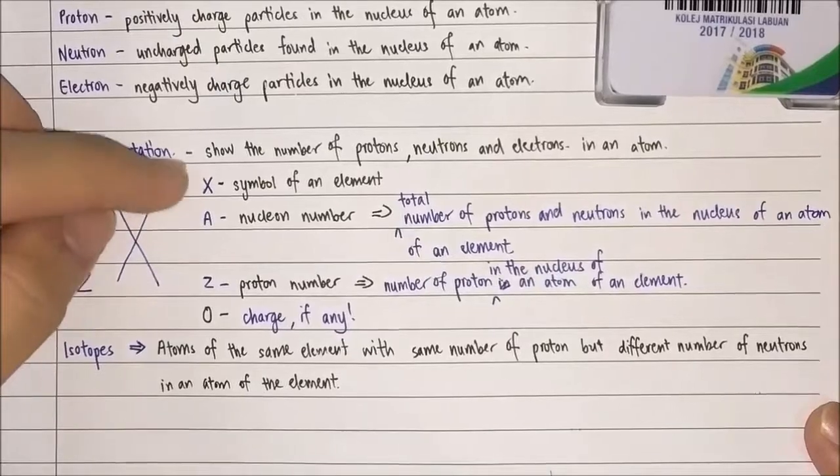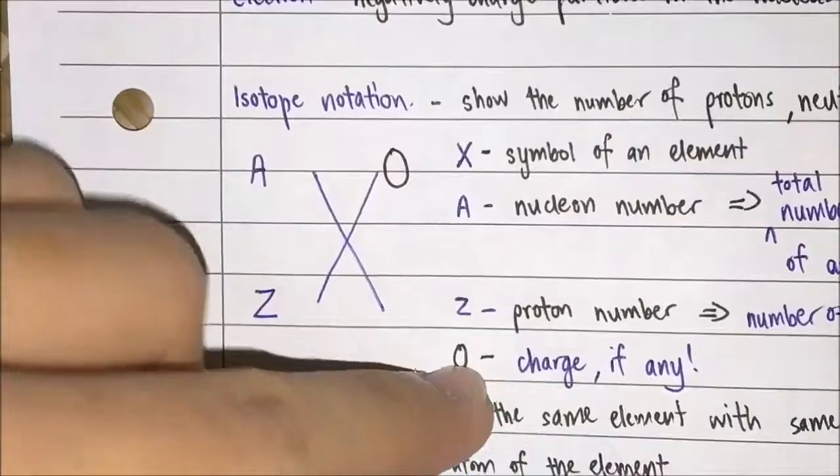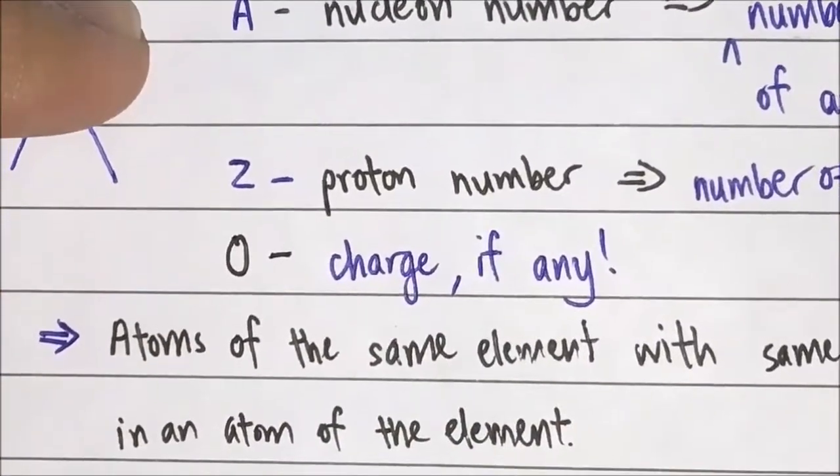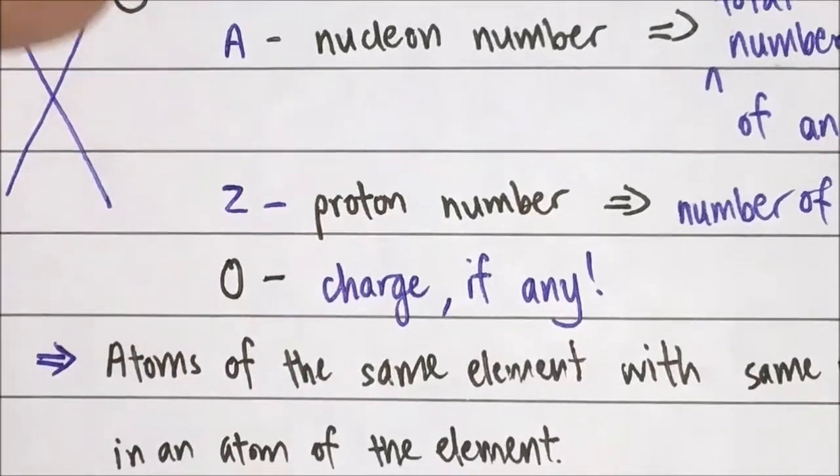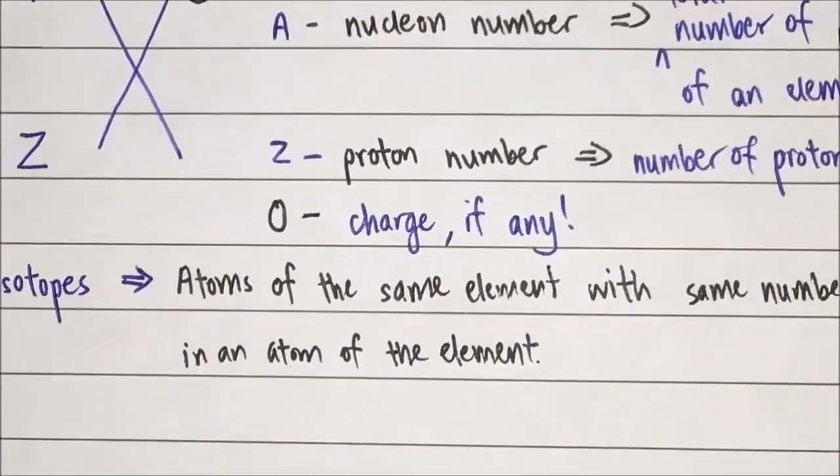You see a circle right top of the X. The circle means that if there is a charge, there will be positive charge. If the circle here is negative, means that the element has more electrons.